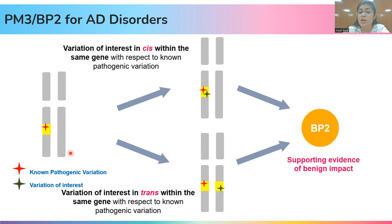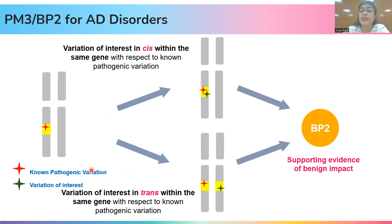However, there is one caution to be remembered here. BP2 can only be assigned when the disease is fully penetrant, meaning we are sure that the disease is 100% explained by the known pathogenic variation and there is no other underlying cause explaining reduced penetrance. If the disease is not fully penetrant, we cannot assign BP2 for the variation of interest, because this variation may have some other role in disease manifestation.